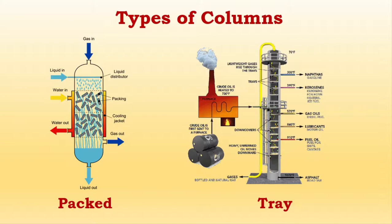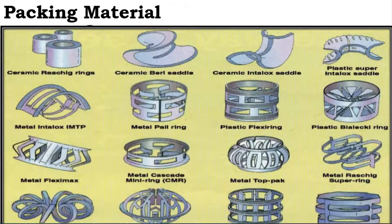We have a packed bed and a tray. A packed vessel is usually filled with packing material. As you can see, there are various types of packing materials available. The packings can be sections with ceramic raschig rings or saddles. The packing material is used to increase the surface area for mass transfer between gas and liquid phases during the distillation process.